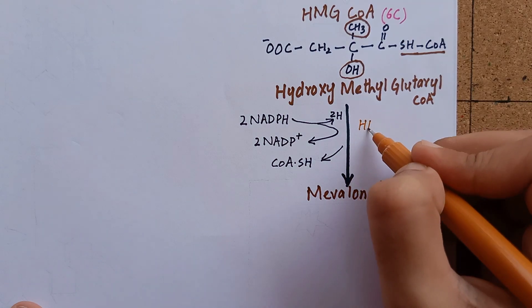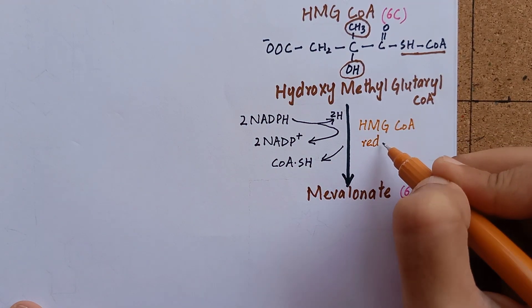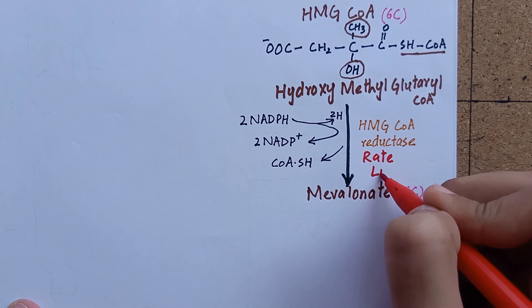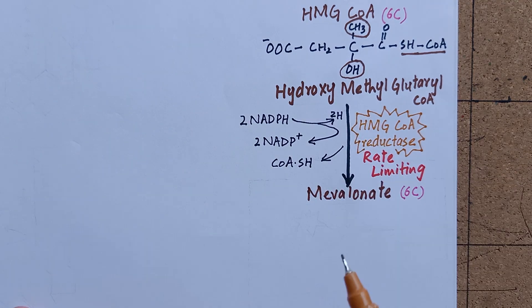This is a very important step to remember. The enzyme used in this step will be HMG-CoA reductase. This is the rate-limiting enzyme in cholesterol synthesis. It is present in endoplasmic reticulum and catalyzes the conversion of HMG-CoA to mevalonate.